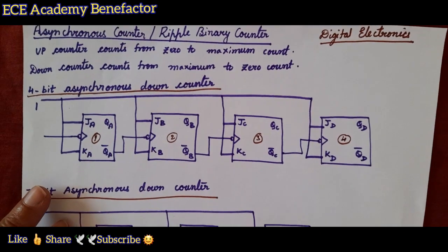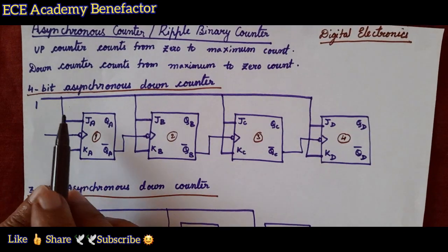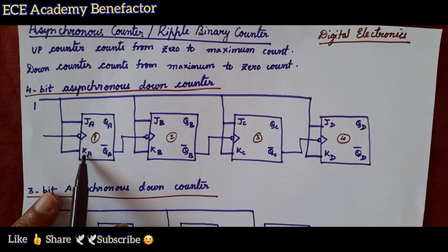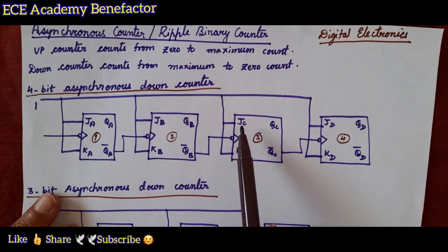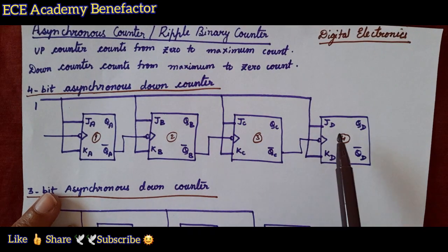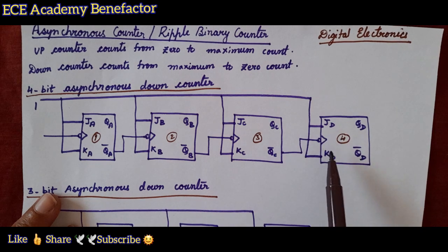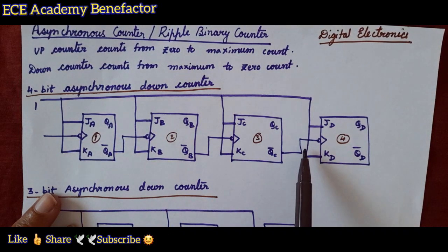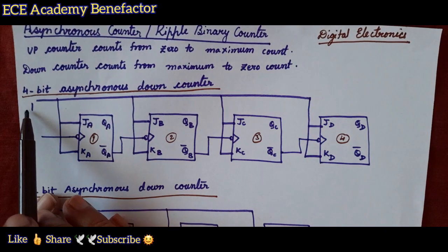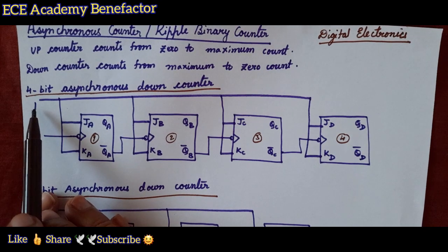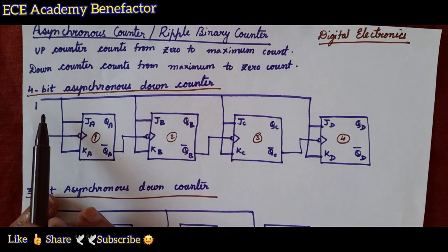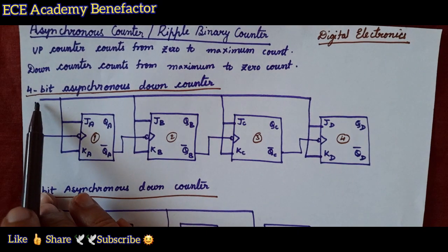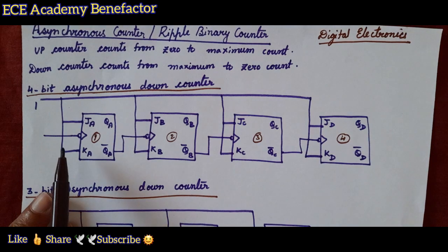For drawing an asynchronous counter, all the flip-flops are JK flip-flops. The inputs are JA KA for the first, JB KB for the second, JC KC for the third, and JD KD for the fourth flip-flop. All the inputs of all 4 flip-flops are connected to logic high, that is to 1. This is the first point to be remembered for drawing an asynchronous counter.